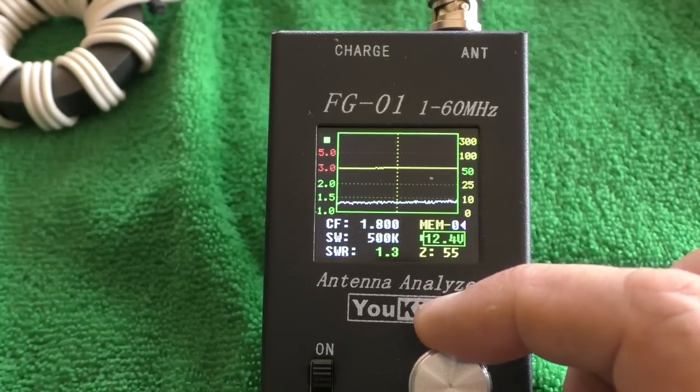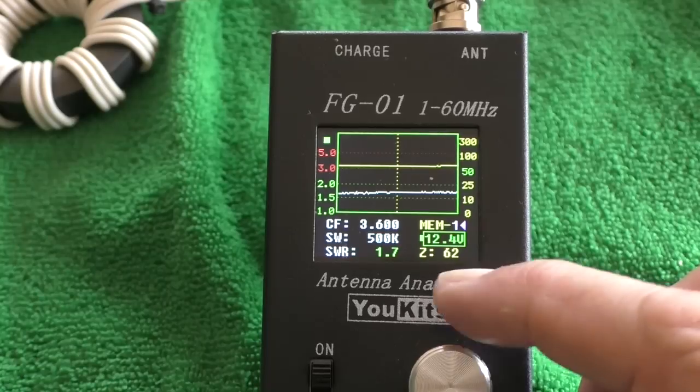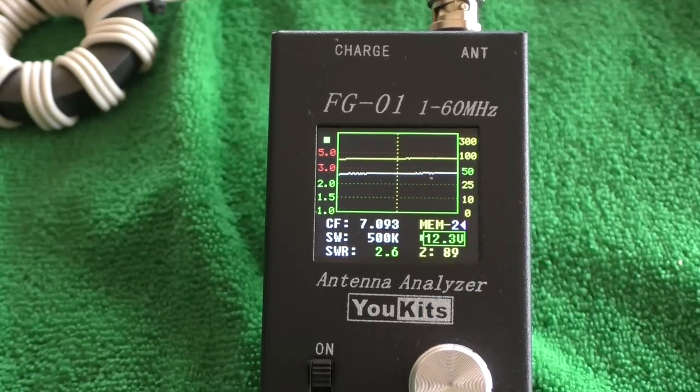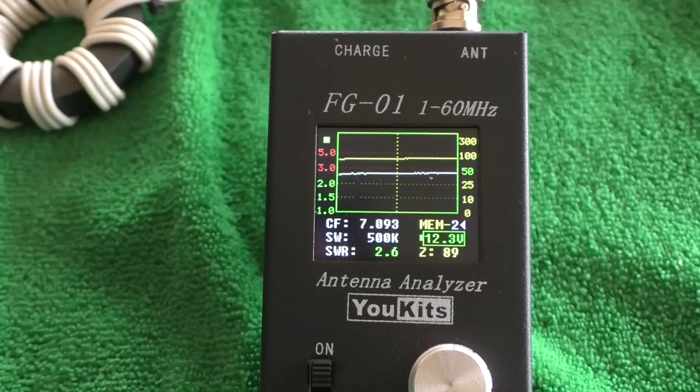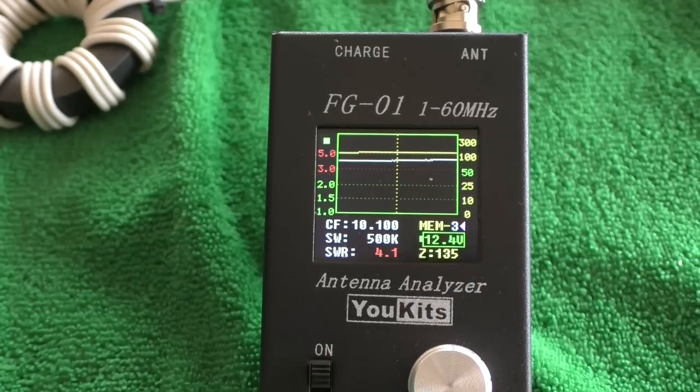So let's go to 80 metres, 3.6 megs. There we go. And the SWR has gone to 1.7 and the impedance is now 62 ohms. So not so good, but you know, could work with that. And there we get to 40 metres, 2.6 to 1 and 89 ohms. As soon as we get to 10 megs, 4.1, 135 ohms.